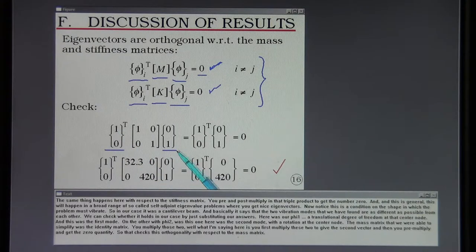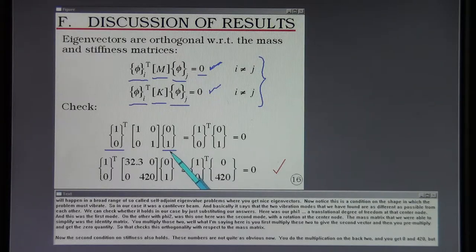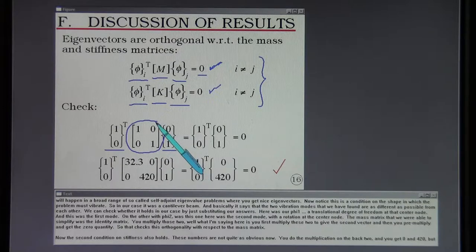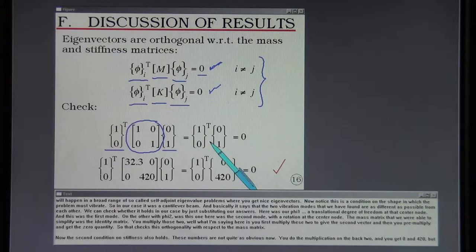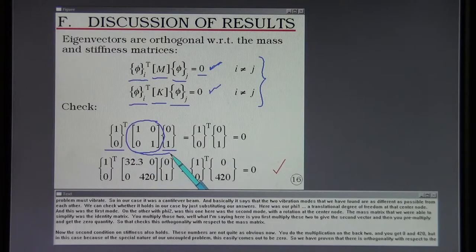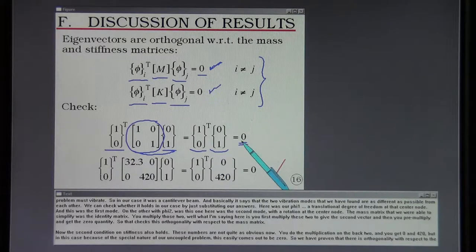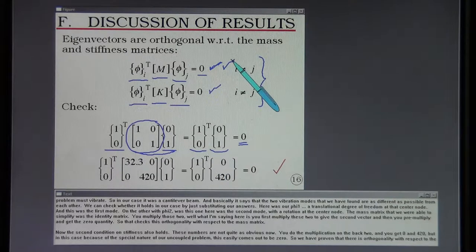Phi2 was this one here, the second mode with a rotation at the center node. The mass matrix that we were able to simplify was the identity matrix. You multiply those two - what I'm saying is you first multiply these two to give the second vector. Then you pre-multiply and get the zero quantity. So that checks this orthogonality with respect to the mass matrix.